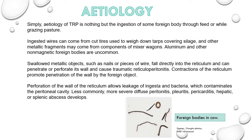Coming on to the etiology of this disease. The etiology of TRP is the ingestion of some foreign body in feed or while grazing pasture. Ingested wires can come from cut wires used to weigh down tarps covering silage, and other metallic fragments may come from components of mixer wagons. Aluminum and other non-magnetic foreign bodies are uncommon but may also be the cause. Swallowed metallic objects such as nails or pieces of wire fall directly into the reticulum and can penetrate or perforate its wall, causing traumatic reticuloperitonitis.